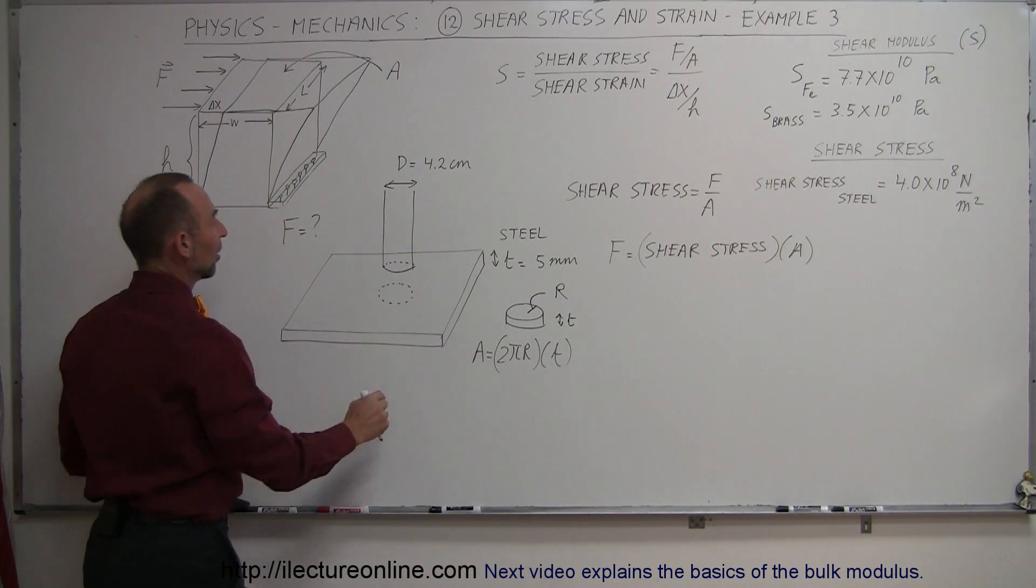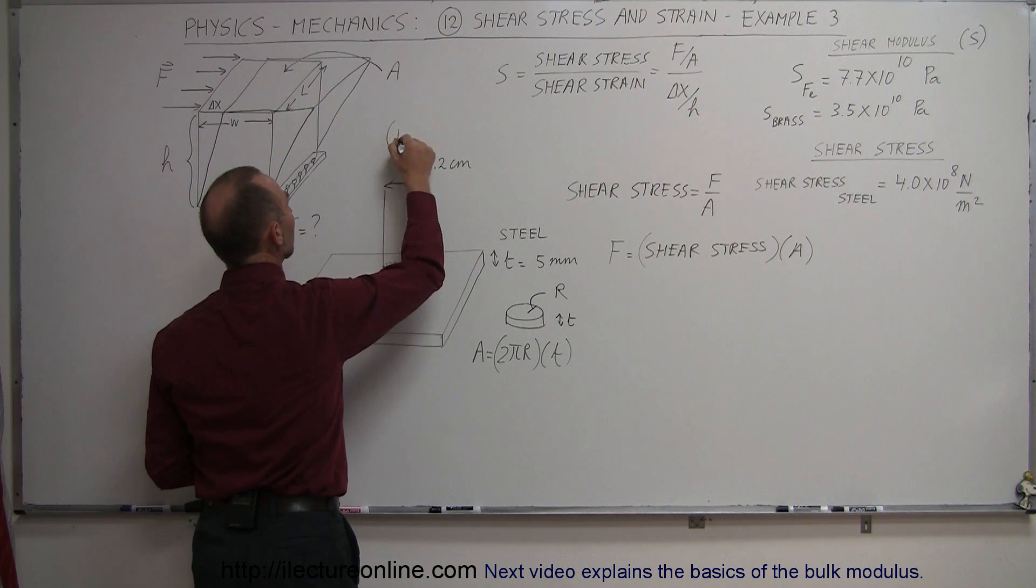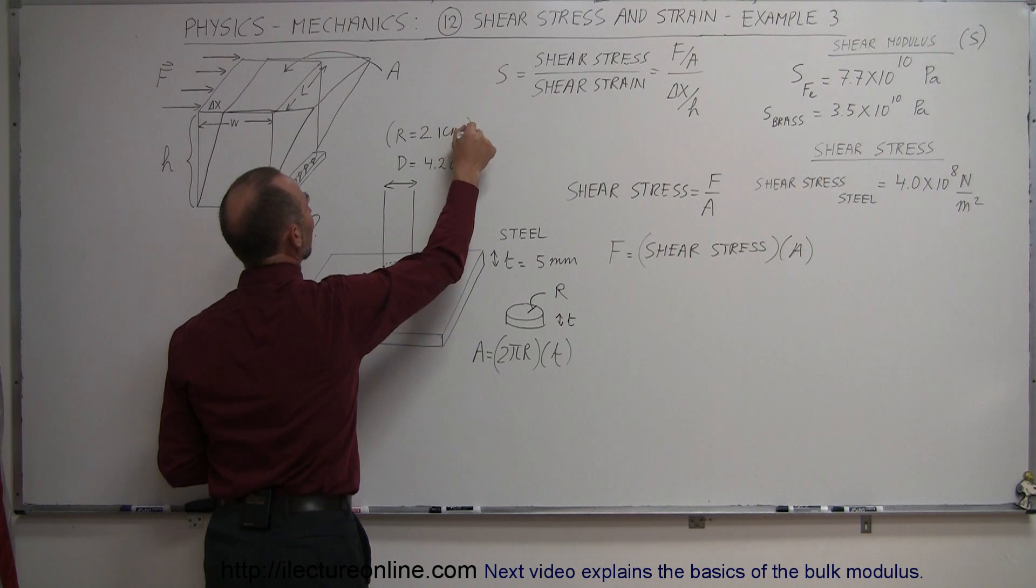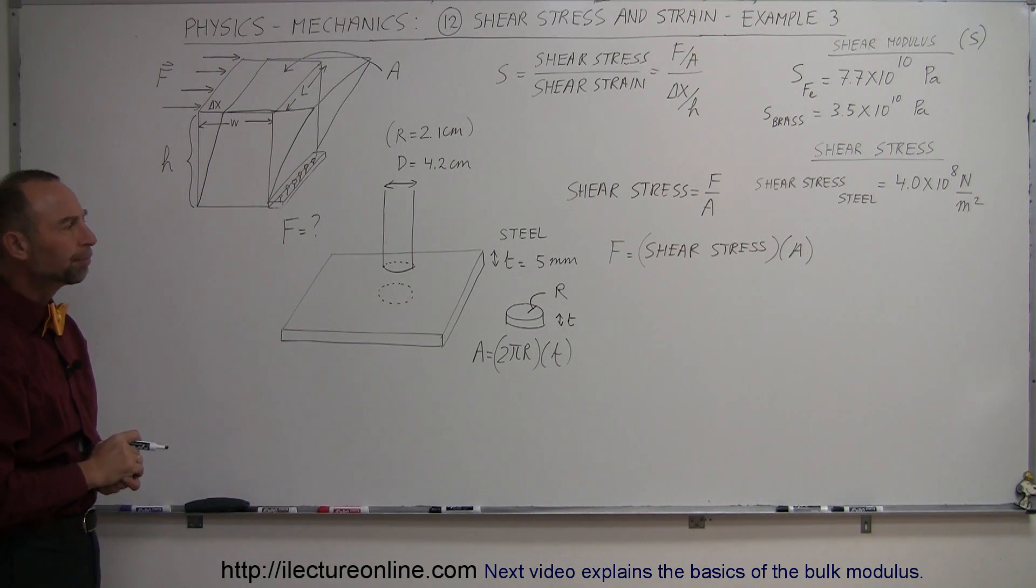And of course in this case, the radius of the cutout would be half the diameter. That means the radius is equal to 2.1 centimeters if the diameter twice the radius is 4.2 centimeters.